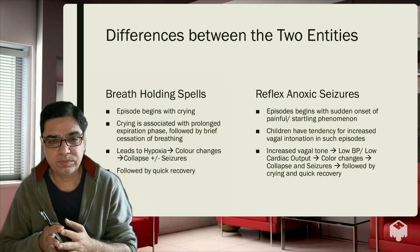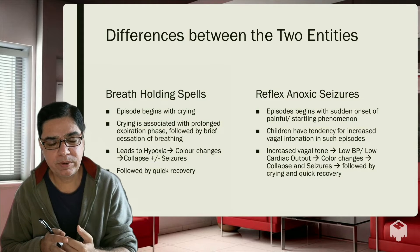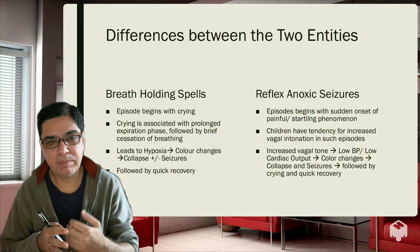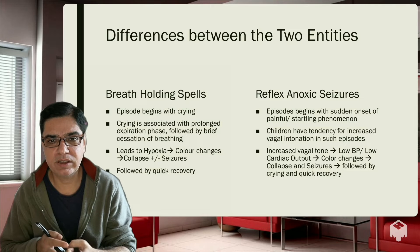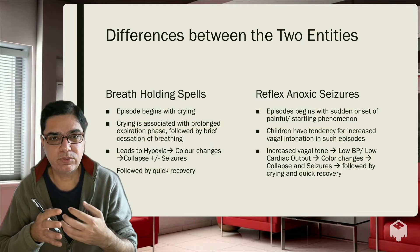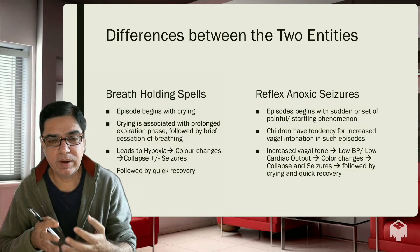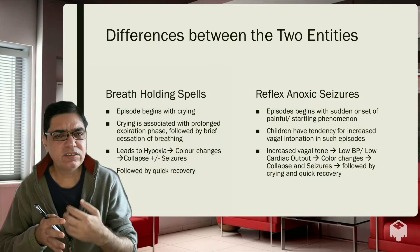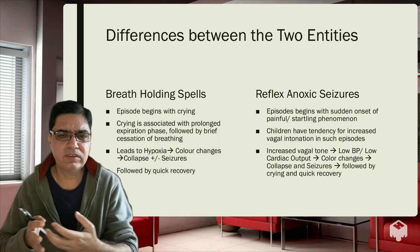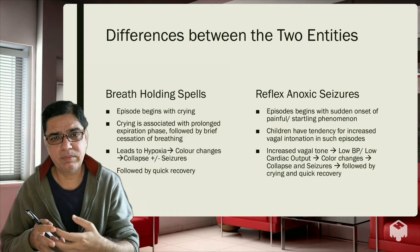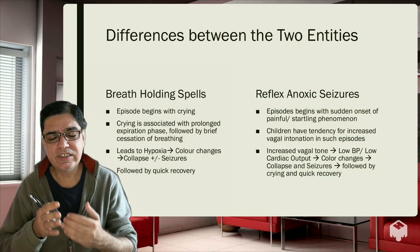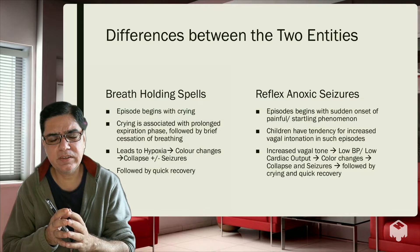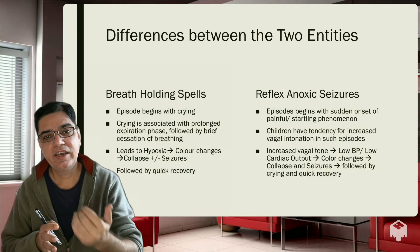When the vagal system is stimulated, cardiac output and blood pressure fall. Increased vagal tone leads to reduced cardiac output and reduced blood pressure. Blood starts pooling in the periphery, causing color changes. Most of these children become very pale — as if the blood has been drained from them — and then they collapse, simply because cardiac output and blood pressure are so low that the brain is not getting enough blood. After collapsing, some children start having a brief episode of seizures, which then suddenly stop, because as the child collapses and lies flat, cardiac output begins returning to normal. These children usually cry after recovering from the seizure. So: breath holding spells start with crying, while reflex anoxic seizures end with crying.